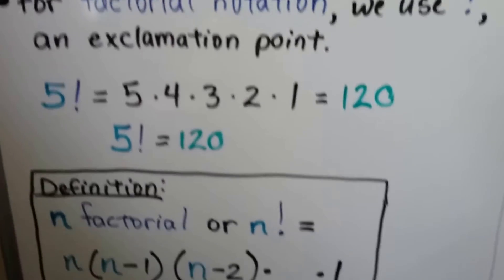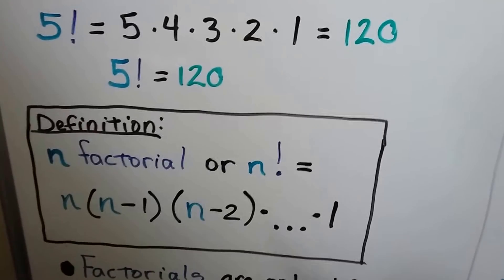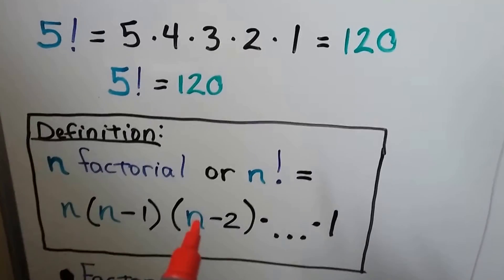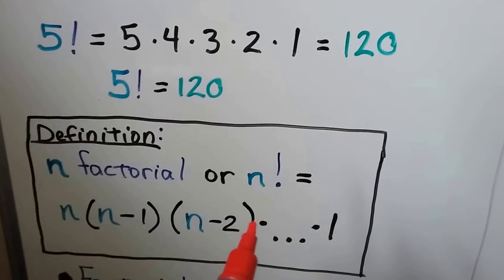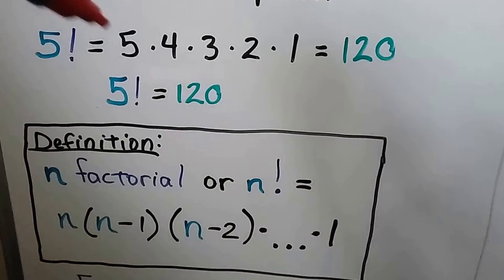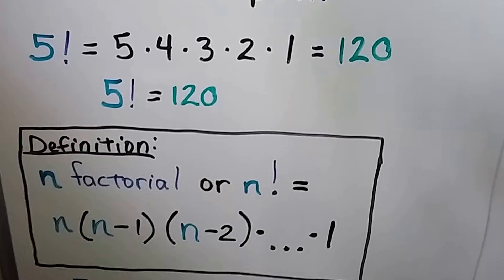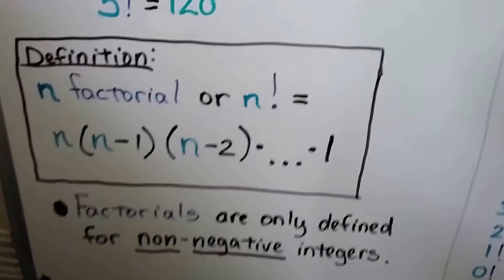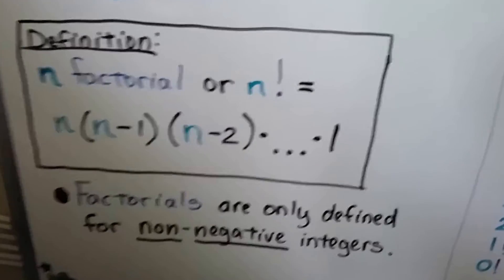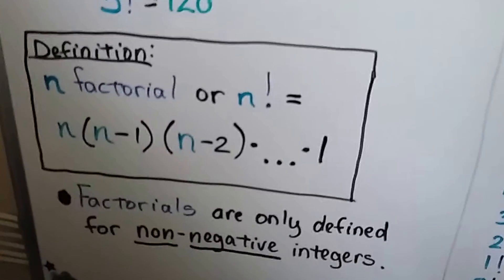The formal definition: n factorial is equal to n times n minus 1 times n minus 2, and so on, until we get to 1. See — 5, 5 minus 1, 5 minus 2, until we get down to 1. And factorials are only defined for non-negative integers, so that would mean positive.